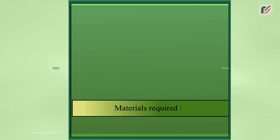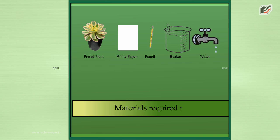Materials required: A potted plant of variegated leaf such as money plant or crotons, white paper sheet, pencil, beaker, water, water bath, iodine solution and alcohol.